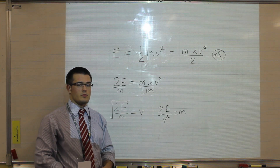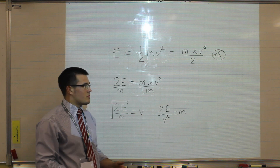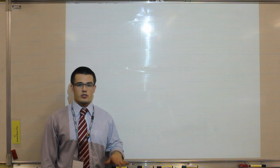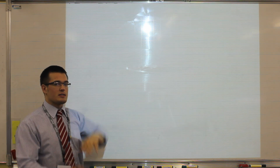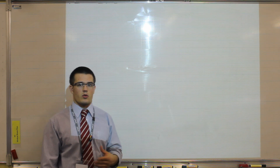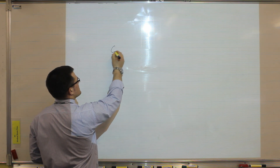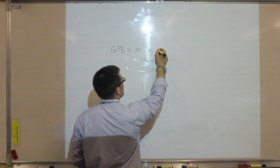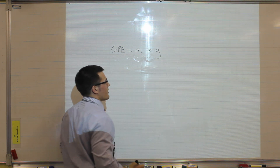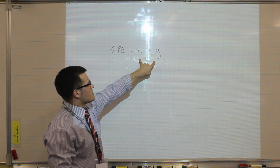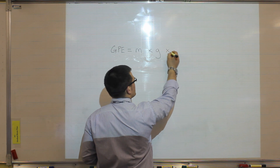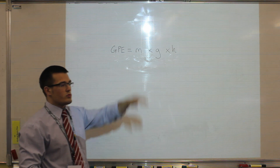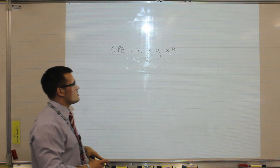We'll look at one more example, which comes at the end of P3, to do with the relationship between kinetic energy and gravitational potential energy. The final equation is the conversion between gravitational potential energy into kinetic energy for a falling object. Examples of this would be skydiving or roller coasters. The equation for gravitational potential energy, or GPE, is equal to the mass multiplied by the acceleration due to gravity G, multiplied by the change in height. If an object falls, its gravitational potential energy is transferred into kinetic energy.